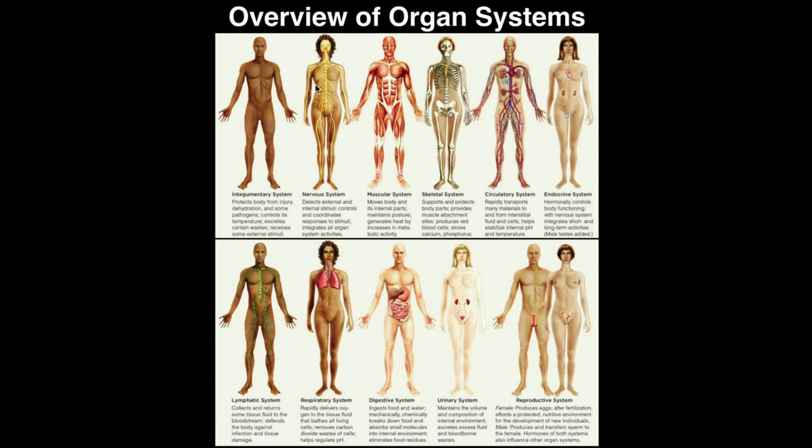Moving on to the nervous system, which we'll also cover in this course. The nervous system is all about detection of stimuli, both external and internal. In terms of detection, we're talking about sensory functions — detecting something is hot, perceiving a color with your vision — but also control of movement.